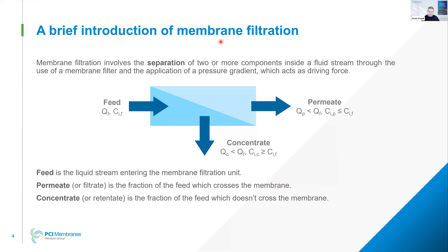In the case of MBR, with the feed we mean the mixed liquid that comes from the biological reactor. The permeate is the water that has been purified through the membrane without suspended solids — so without the biomass — which is discharged into the receiving body or sent to further treatment. And with the concentrate, we mean the sludge that we separate. It's a bit like what happens in a clarifier for people who have experience with conventional activated sludge systems.